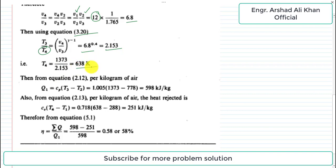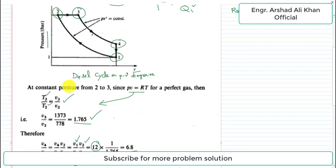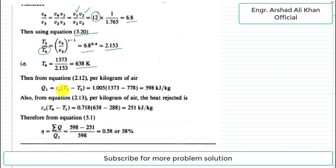Now we have found all temperature values. Heat supplied per kilogram of air equals Cp times (T3 minus T2). From 2 to 3 is heat supplied at constant pressure. Calculating: Q1 equals 1.005 times (1373 minus 778), which equals 598 kJ per kg.